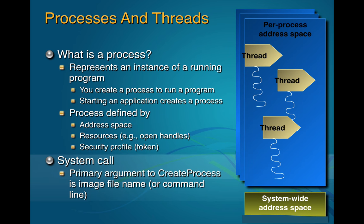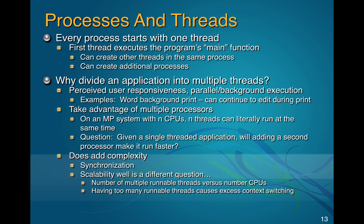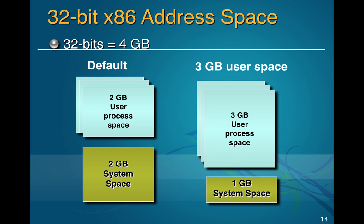In Windows, everything you launch runs in a process, and every process has a bunch of threads — apparently not true in Linux, which was news to me. You can do a system call to invoke an OS command. Threads can proceed independently so that if one process is waiting, another can move ahead. In Linux they apparently use processes where Windows uses threads. Every process starts with one thread and you divide it into multiple threads to keep things moving.